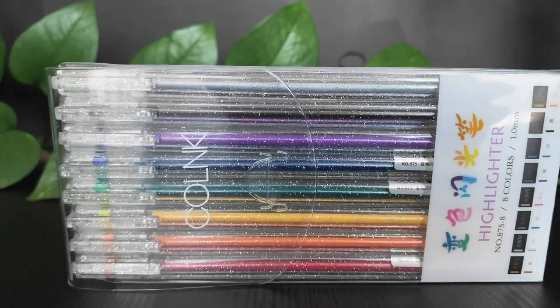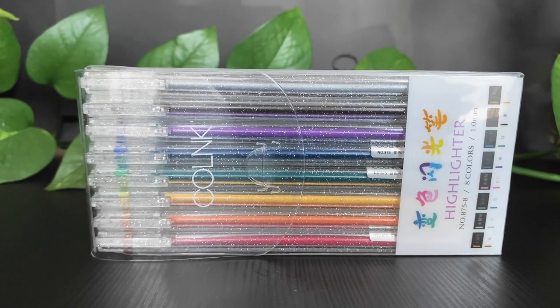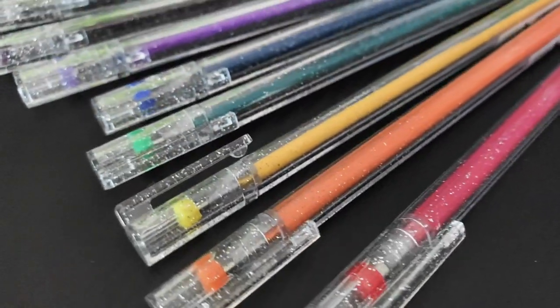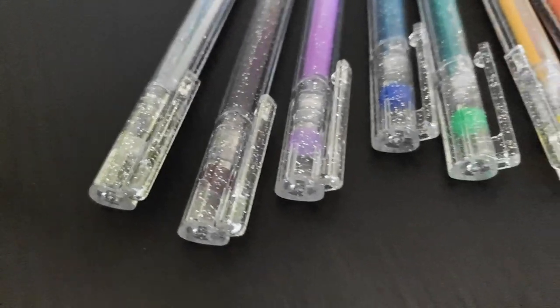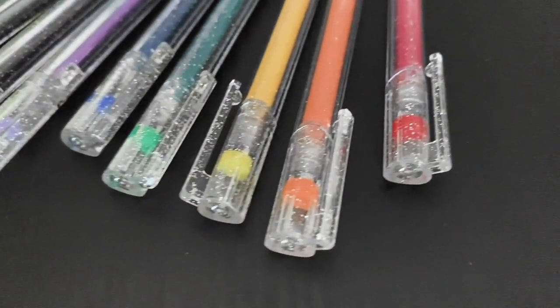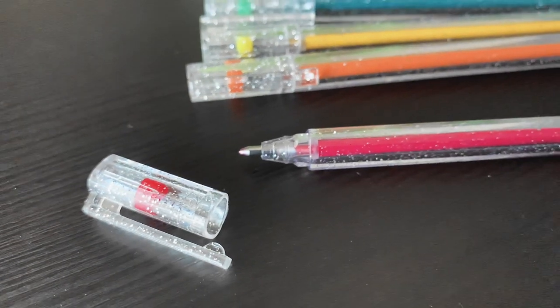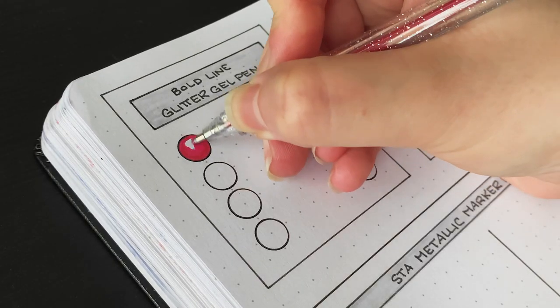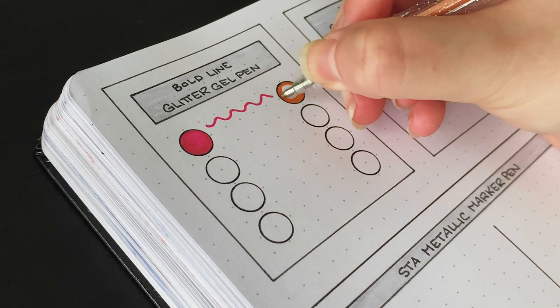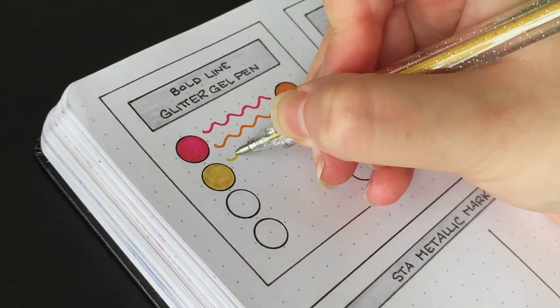I'll start with the Boldline glitter gel pens. There's eight colors, including a silver and a black. The packaging is very glittery and cute, and they have a very fine point so you could use these to write or add glittery details to your art. Things I like about these is the colors are all very bright and pretty, and they write incredibly smoothly. No skipping. And the triangle shape of the barrel makes them really comfortable to hold as well.